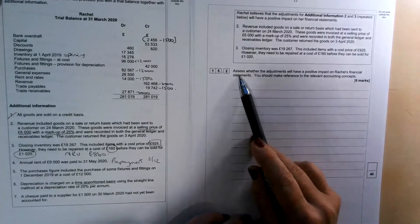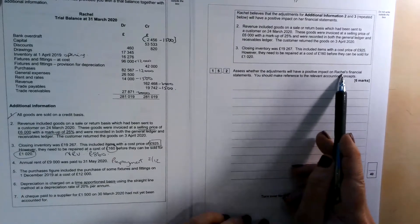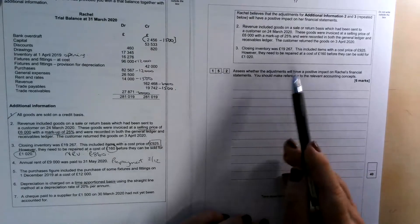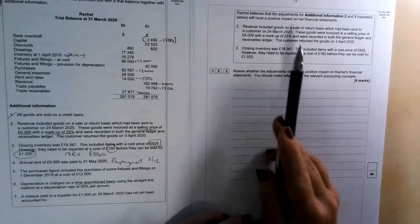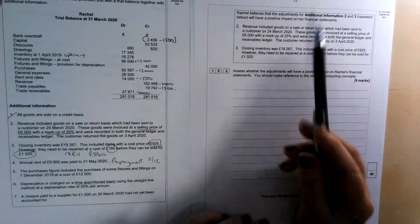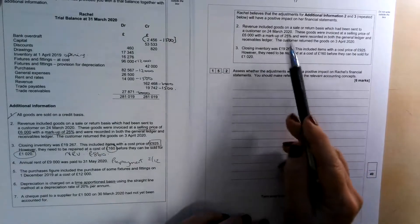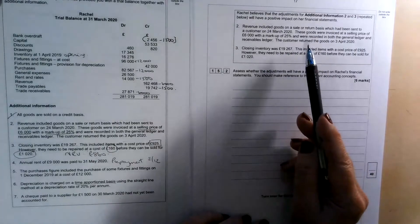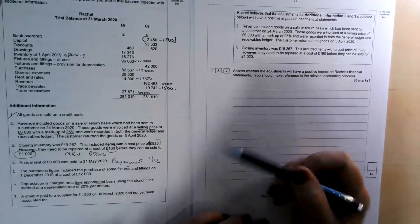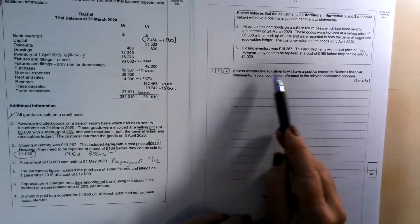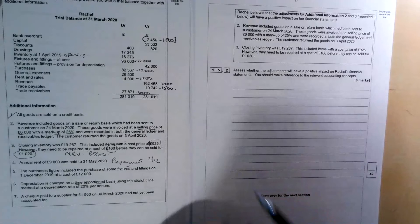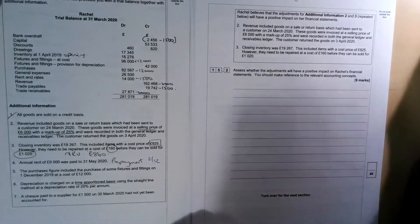Now remember, we need to make a judgment. So we need to assess whether they will have a positive impact on Rachel's financial statements. Now you could go one of two ways with this one. You could say, yes, they'll have a positive impact because the statements will now show a true and fair view, whereas perhaps before they didn't. Or you could say that you don't think they will have a positive impact because her profit overall is going to be down by £1,265. Either way would be absolutely fine. But what you need to do is make sure that you fully assess both things and refer to those accounting concepts. Thanks very much for watching. Don't forget to like and subscribe.